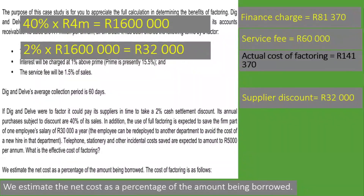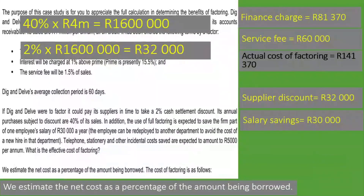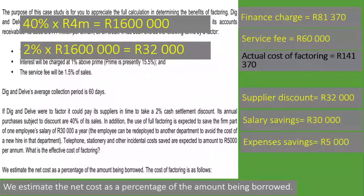Next, full factoring is expected to save part of one employee's salary of 30,000 rand per year, since the employee can be redeployed to another department, avoiding the cost of a new hire. Additionally, telephone, stationery, and other incidental costs saved are expected to amount to 5,000 rand per annum. So salary savings are 30,000 rand and expense savings are 5,000 rand.